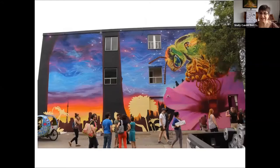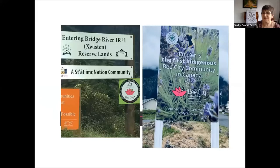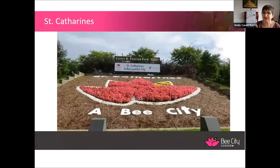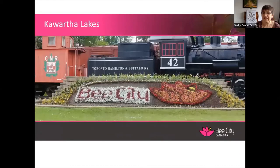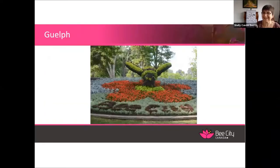Toronto put up a large mural when they became a Bee City — art is a great way to educate people. This is a sweat bee, the bee Toronto chose as their mascot. Here's some city signage from Newmarket showing their Bee City sign. First Nation communities put their signs up right away — they were so proud to become Bee Cities, and both are in British Columbia. St. Catharines created a beautiful floral garden with the Bee City logo.